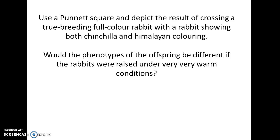If you understood that example, you should be able to use a Punnett square to depict the result of crossing a true breeding full color rabbit (CC) with a rabbit showing both chinchilla and Himalayan color (C^CH C^H). You should also be able to think about whether the phenotypes of the offspring would be different if the rabbits were raised under very warm conditions. Think about that and write those answers out — be expected to discuss them in class, or perhaps to see them on an exam.